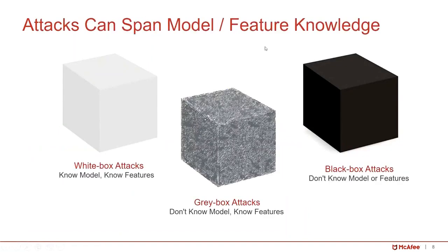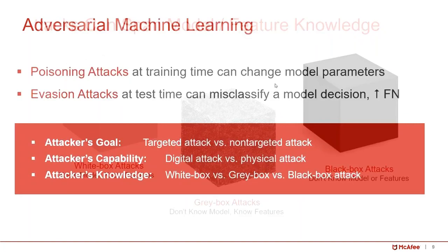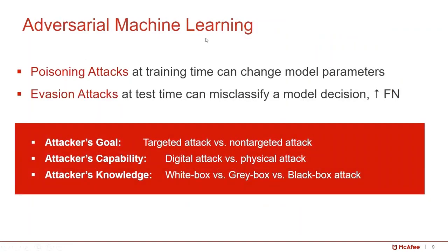Based on attackers' knowledge, adversarial machine learning attacks fall into three types. One is white box attack, which assumes the attacker has full knowledge about your machine learning model and what features you are using. Another type is where the attacker has limited knowledge — they don't know the model but have some knowledge about your features. And then there is black box attack, where the attacker has no knowledge about your system. The key concept is how an attacker can manipulate the system to make the attack successful.